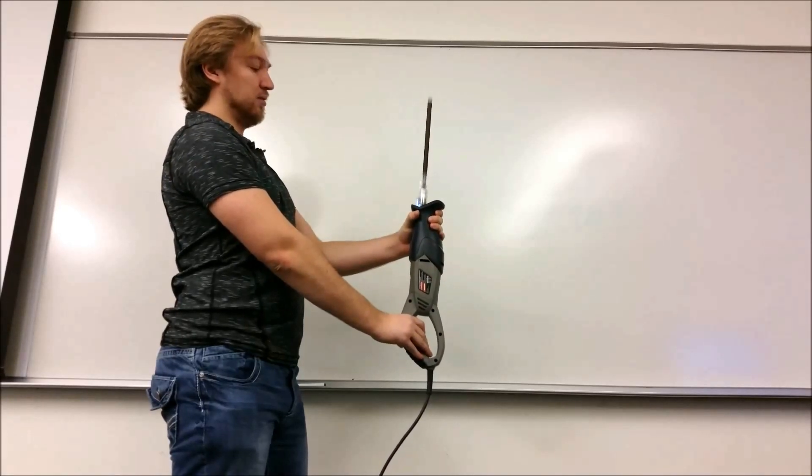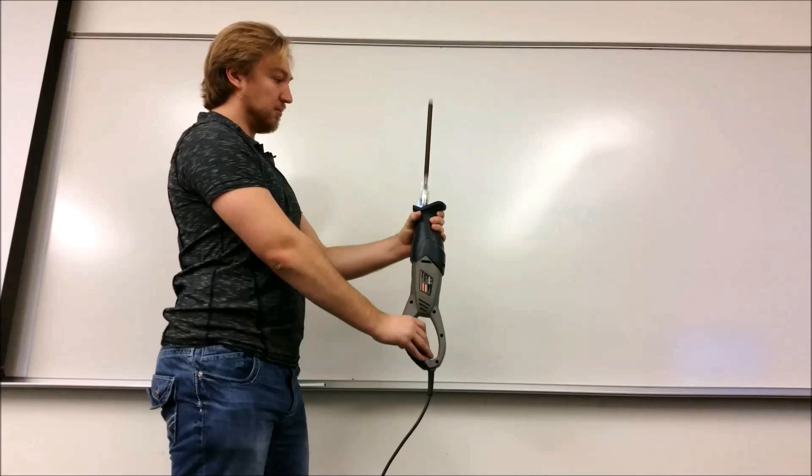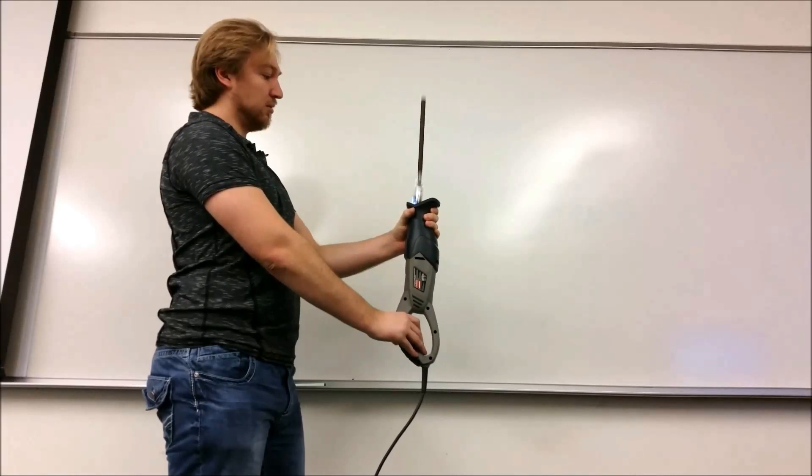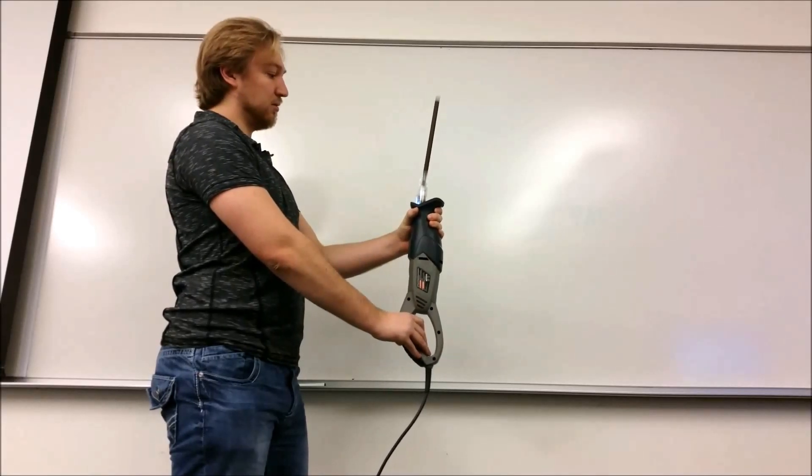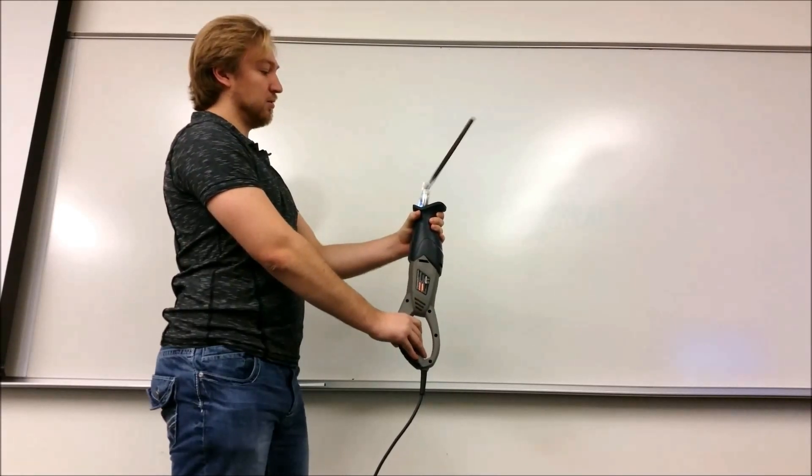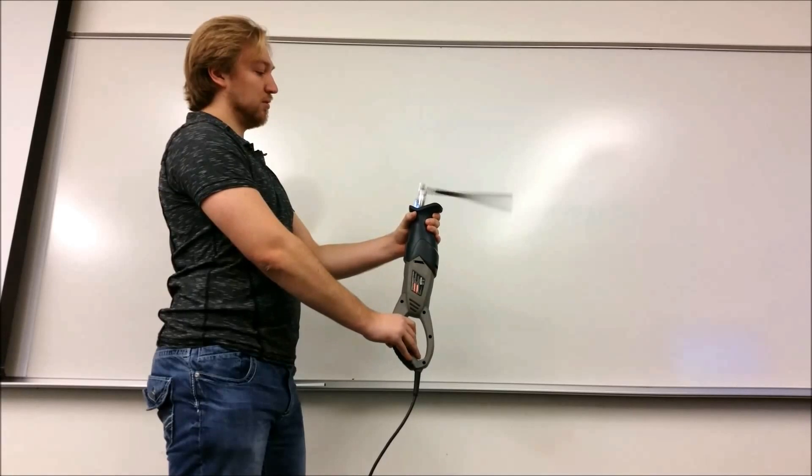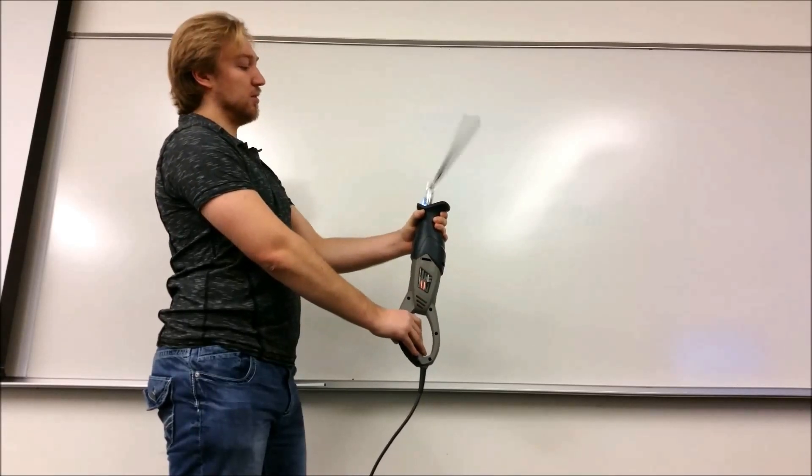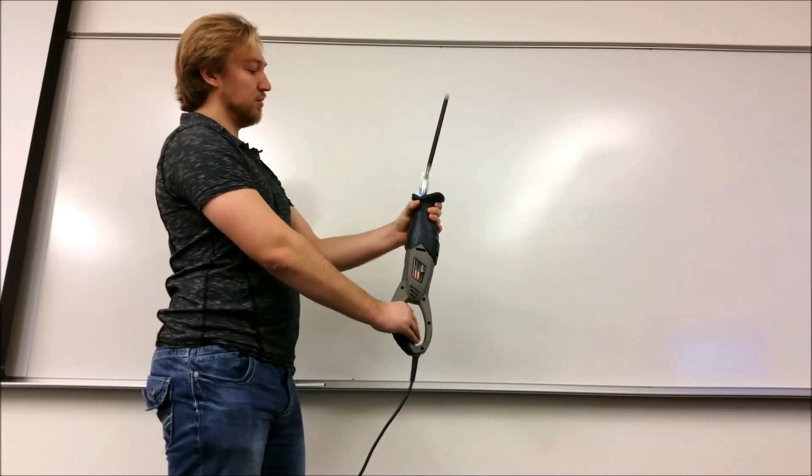So as we can see, the pendulum is able to stabilize itself in an inverted position. And then if we start to slow the driving frequency down, you can see it's starting to fall. If we slow it down low enough, it'll fall all the way down until we raise the driving frequency back up enough to stabilize the pendulum.